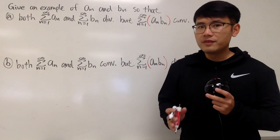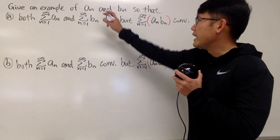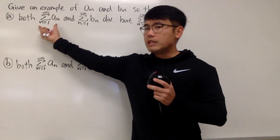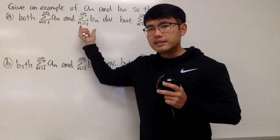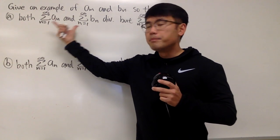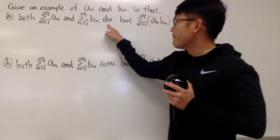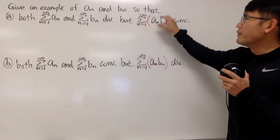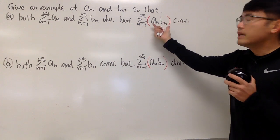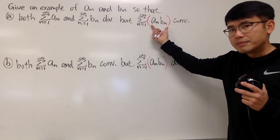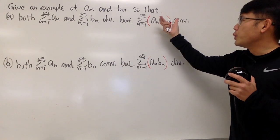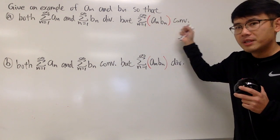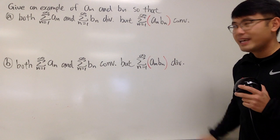In this video, we are going to give an example of aₙ and bₙ so that the series of aₙ and the series of bₙ both diverge, but the series of aₙ times bₙ — be sure you do this part first — we want this series to be convergent.